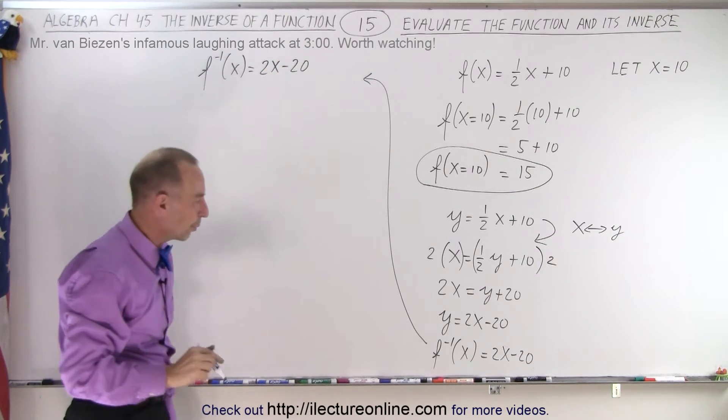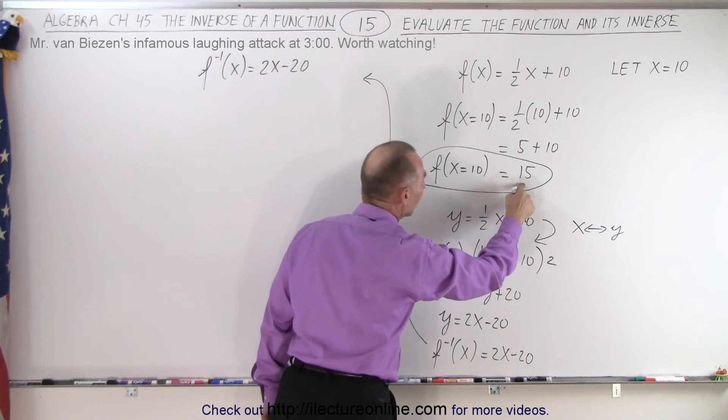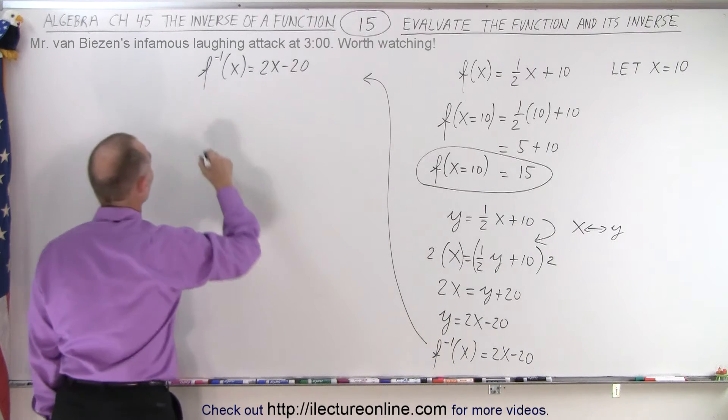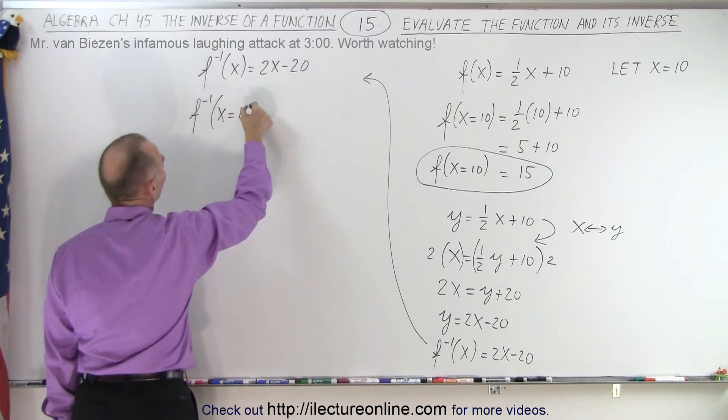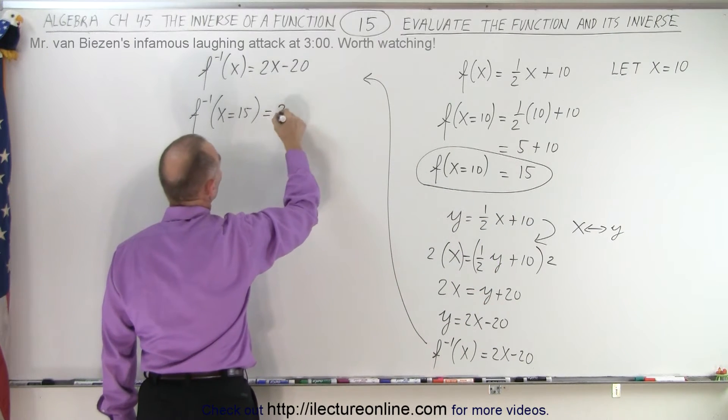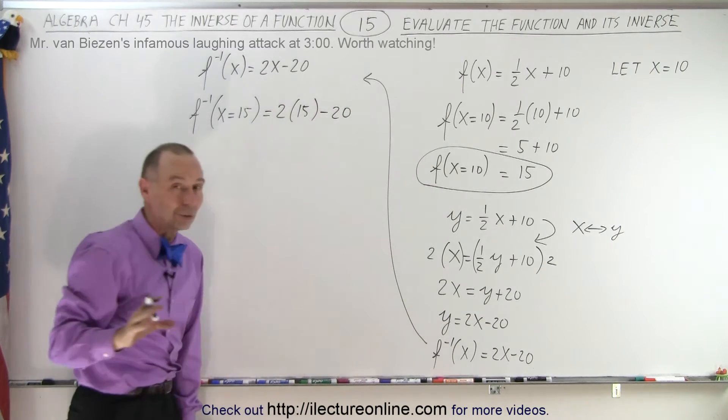What we're going to do now is we're going to evaluate the inverse of the function with the results that we got when we evaluated the function at x equals 10. So now we have the inverse of the function when x equals 15. That's the result right here. Well, that's going to be equal to 2 times 15 minus 20. Now, what do you think that's going to be equal to?